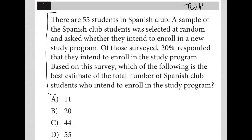The first sentence says there are 55 students in Spanish club. I'm going to say SC equals 55 — SC is Spanish club.